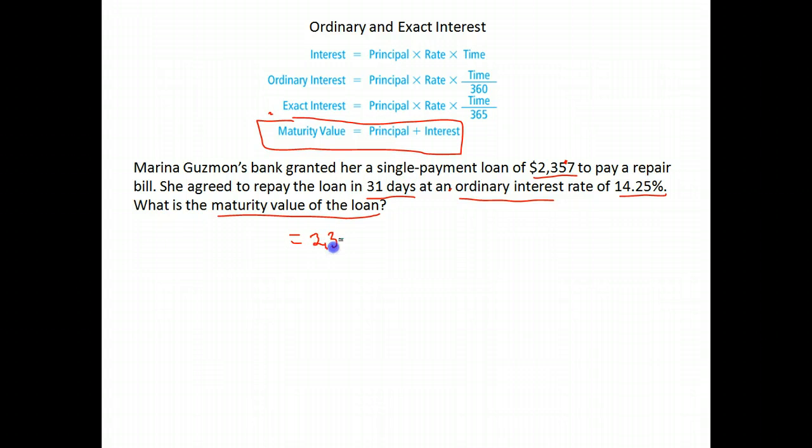We take our principal, $2,357, times our rate, 0.1425. Notice I went ahead and moved my decimal two places to the left on that. Times our amount of time. We had 31 days out of, this is ordinary interest, so out of 360.